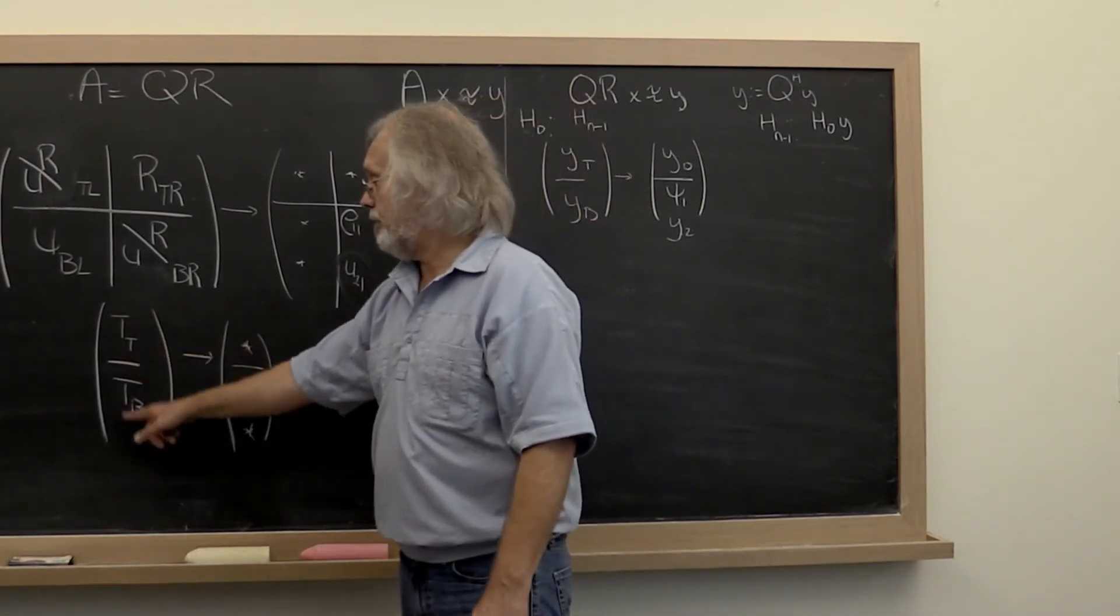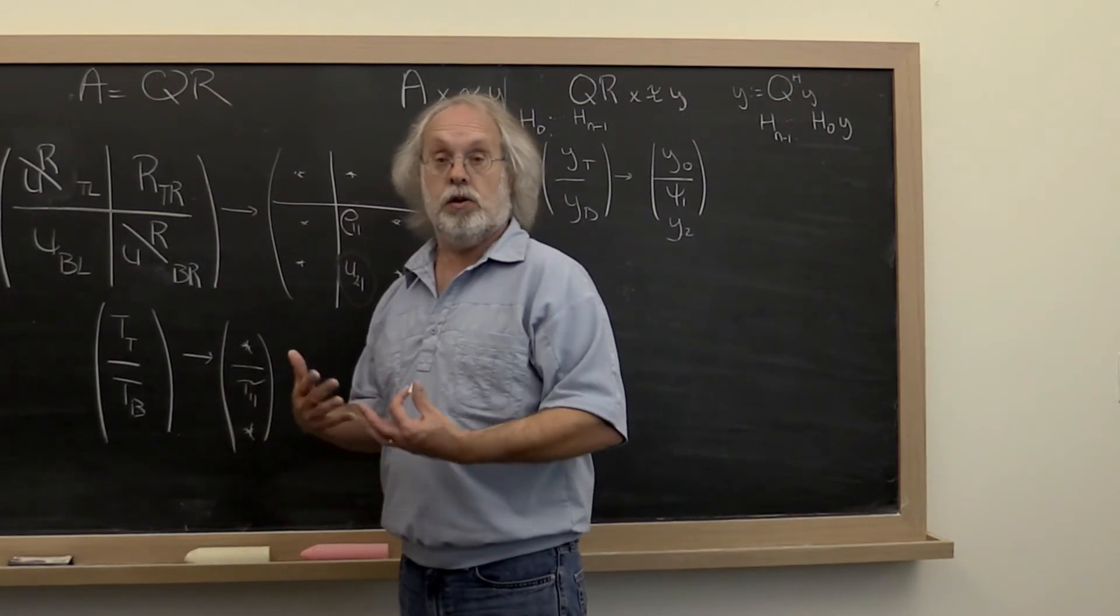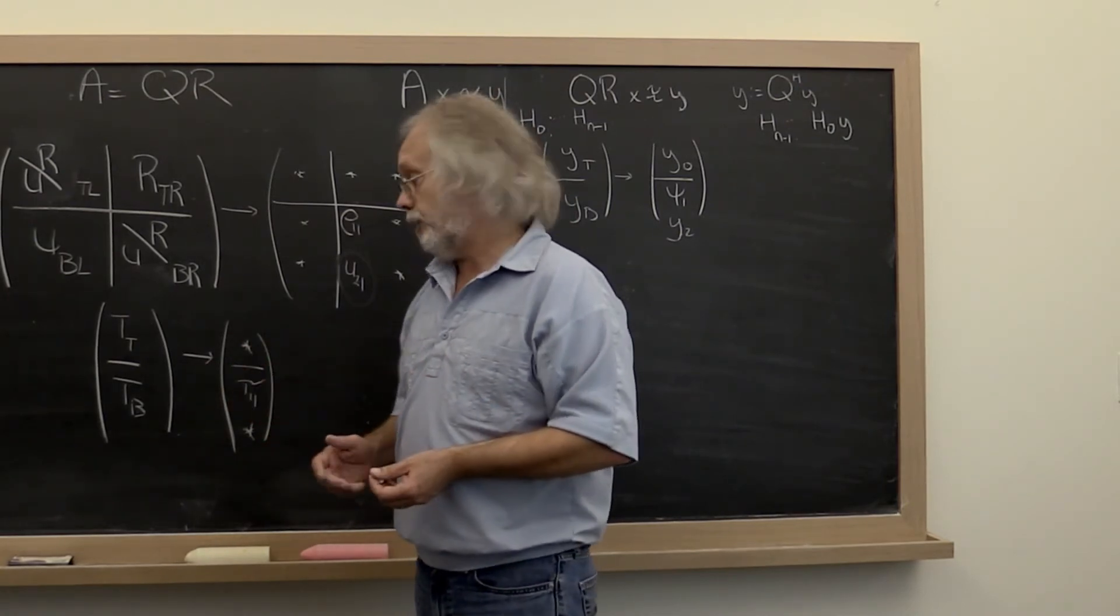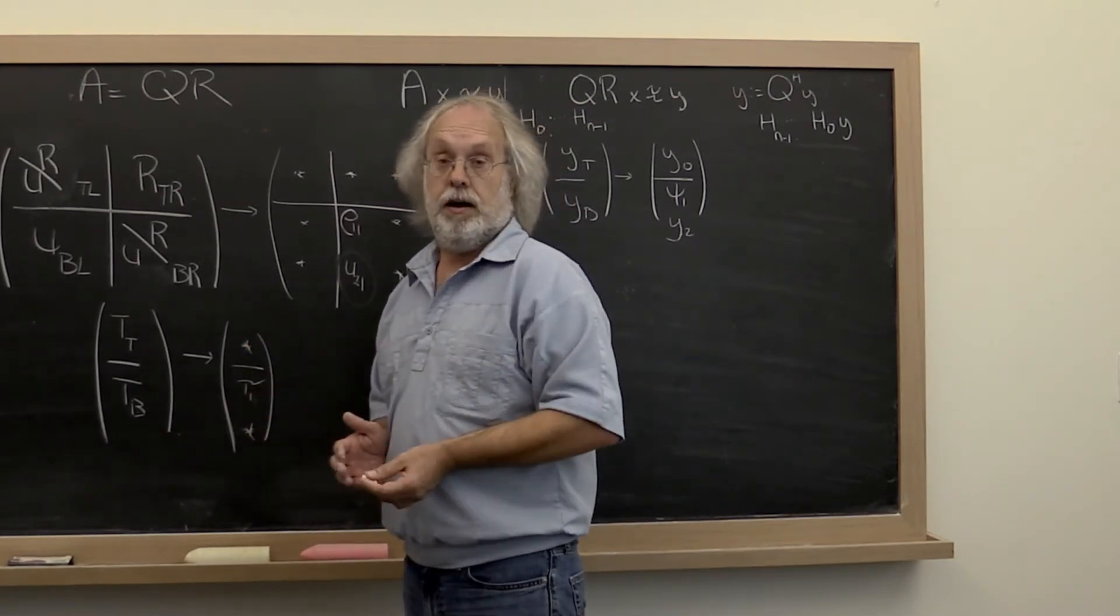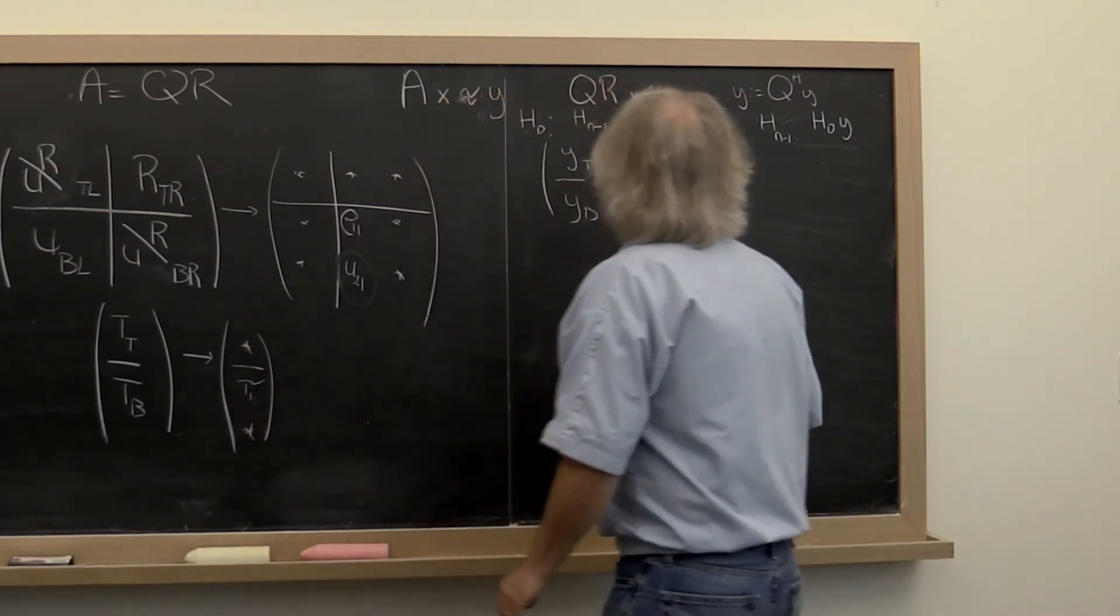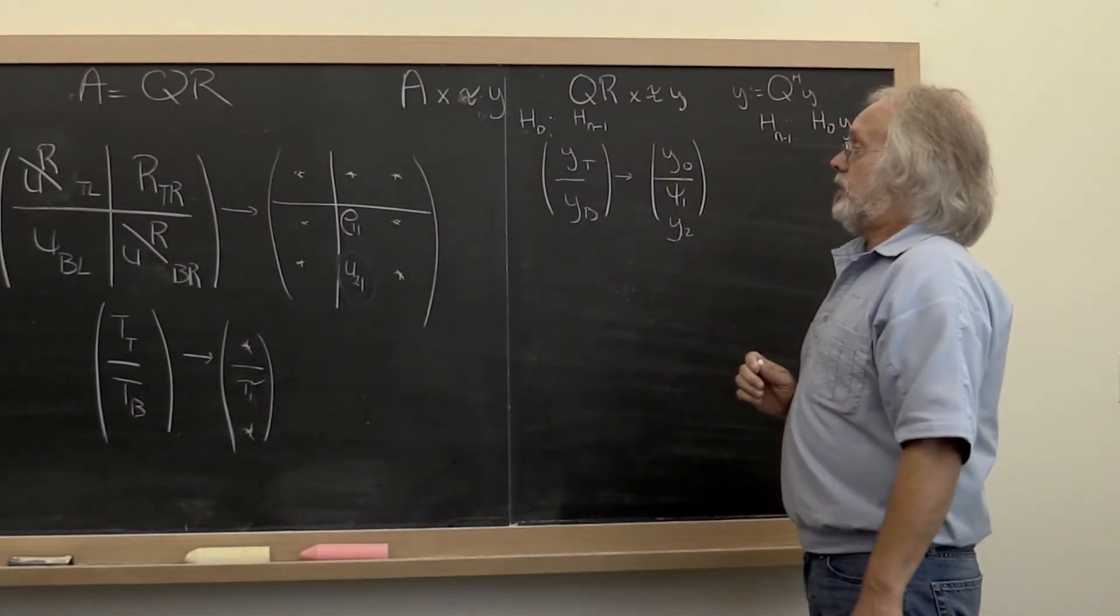And then similarly you have a vector of all of these scalars Tau that were involved in all of these Householder transformations. So you need to pick out the Tau corresponding to the current Householder transformation. And then you expose the different pieces of Y.